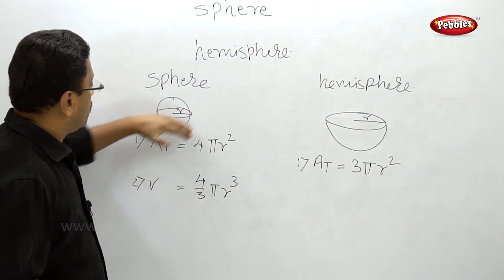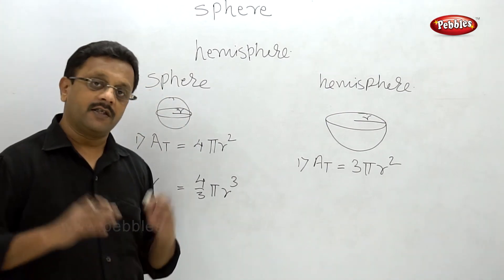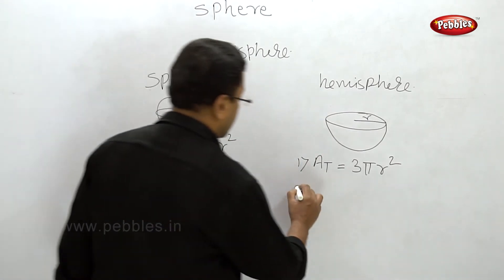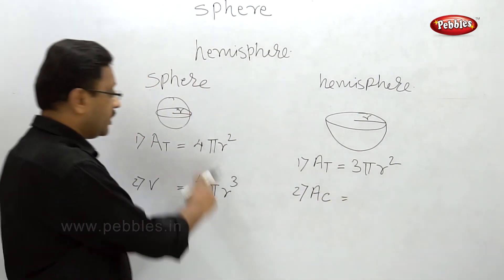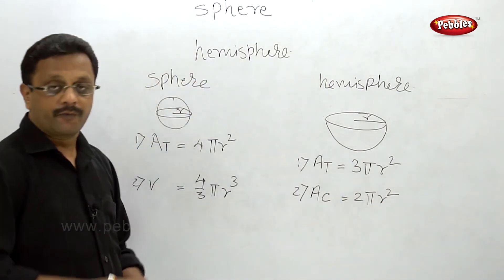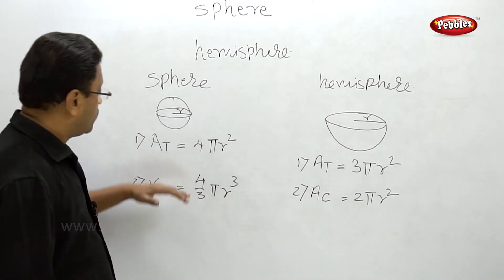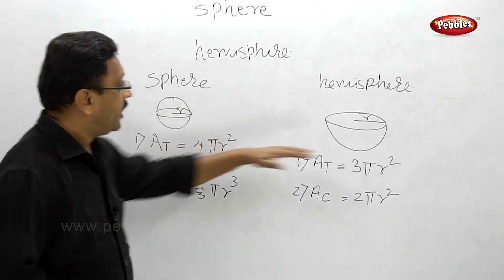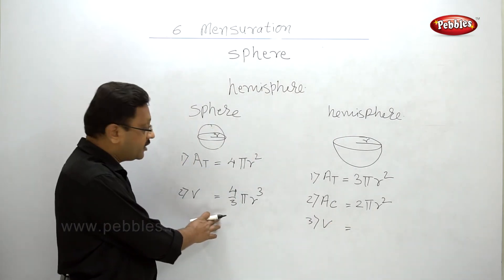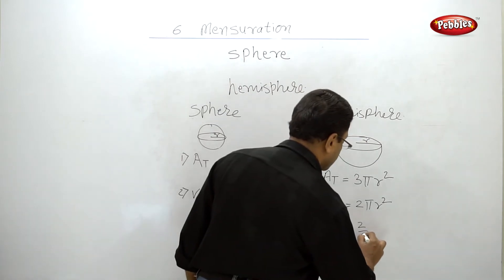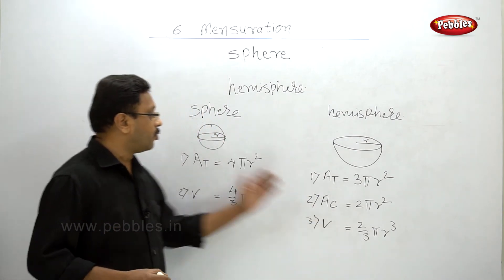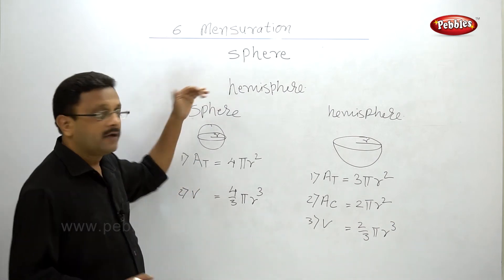In the case of a sphere, the total surface area and curved surface area are one and the same. But that is not the case for a Hemisphere. The curved surface area of a hemisphere is 2πr². The volume of a hemisphere is half of the volume of the sphere because it is cut exactly halfway, so the volume is (2/3)πr³.